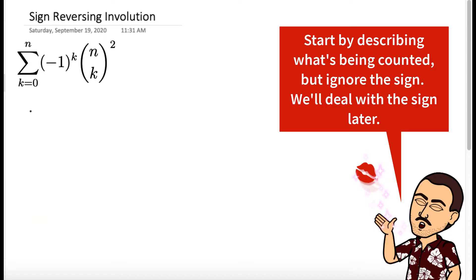We should start by describing what this counts, ignoring the sign. So n choose k squared is equal to the number of subsets, which I'll call A and B, subsets of n, the numbers 1 through n, such that the size of A is equal to the size of B, and that's equal to k.